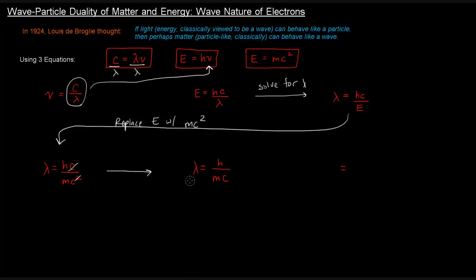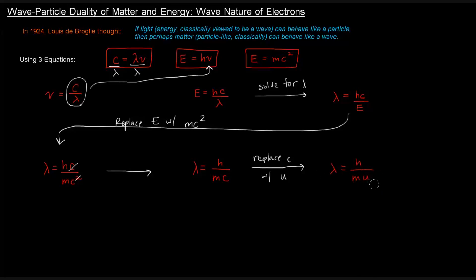The wavelength equals Planck's constant over mass times the speed of light. But what de Broglie was doing was trying to develop an equation to express the wavelength of a particle — and the particle is not necessarily moving at the speed of light. So he replaced C with u, representing the particle's speed, giving us lambda equals h over mu.